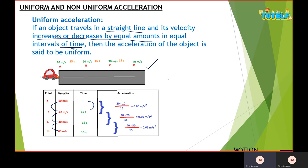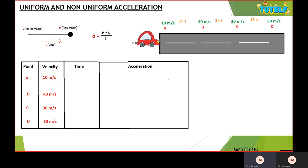Now let's look at non-uniform acceleration. Here at point A the velocity is 10, at B it is 40, at C it is 30, and at D it is 60 m/s. The time interval for each segment is 15 seconds, as shown in the table.